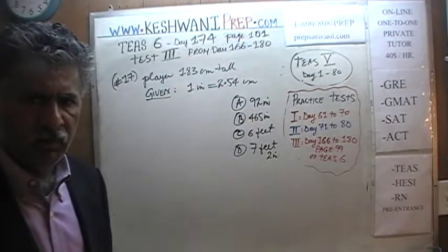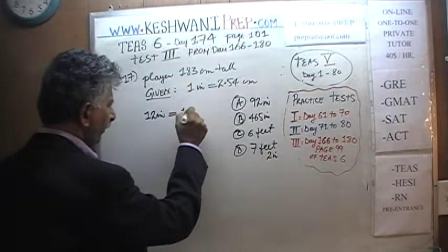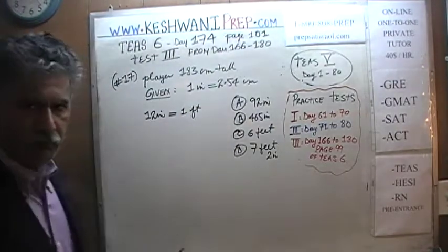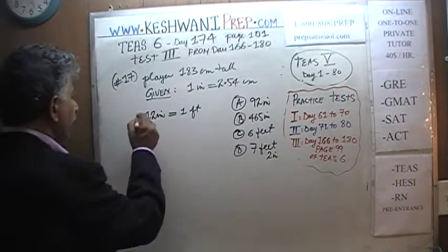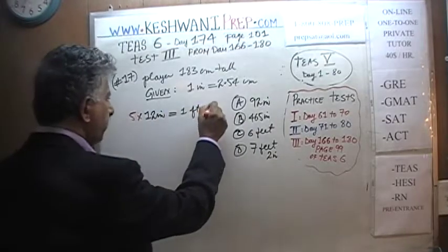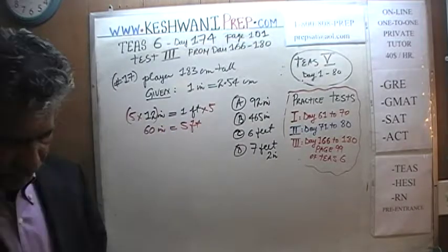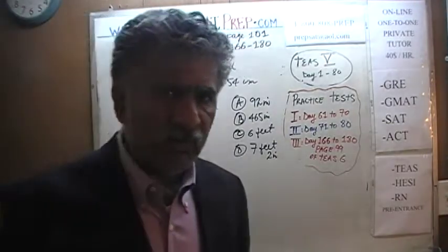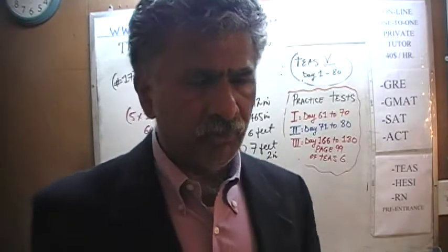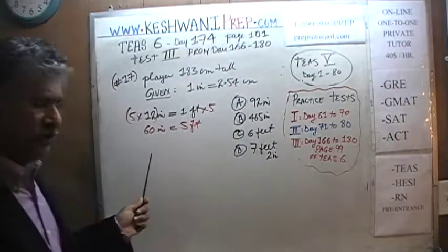92 inches — how do we put that in perspective? Everybody knows that 12 inches equals 1 foot. If you take that and multiply both sides of the equation by 5, then 5 times 12 is 60 — so 60 inches equals 5 feet. You have to memorize the basics: 12 inches equals 1 foot. You don't want to memorize every conversion, just multiply both sides by 5 and you find out that 60 inches equals 5 feet.